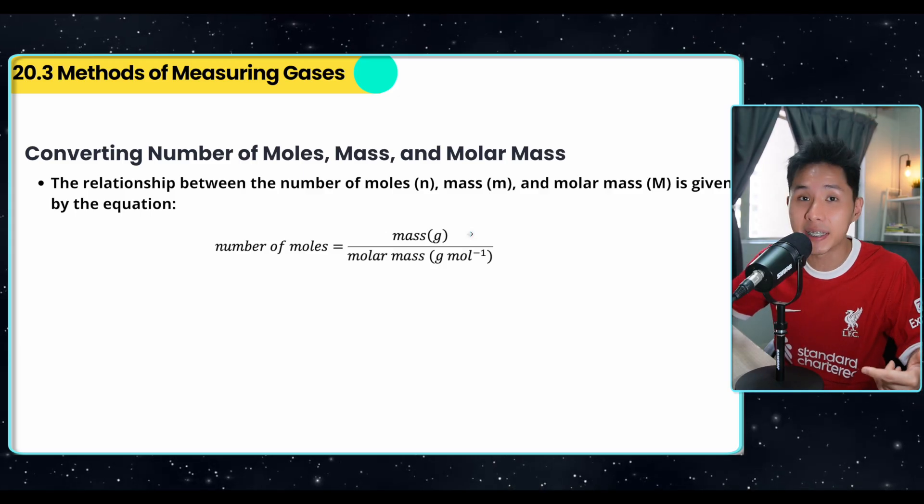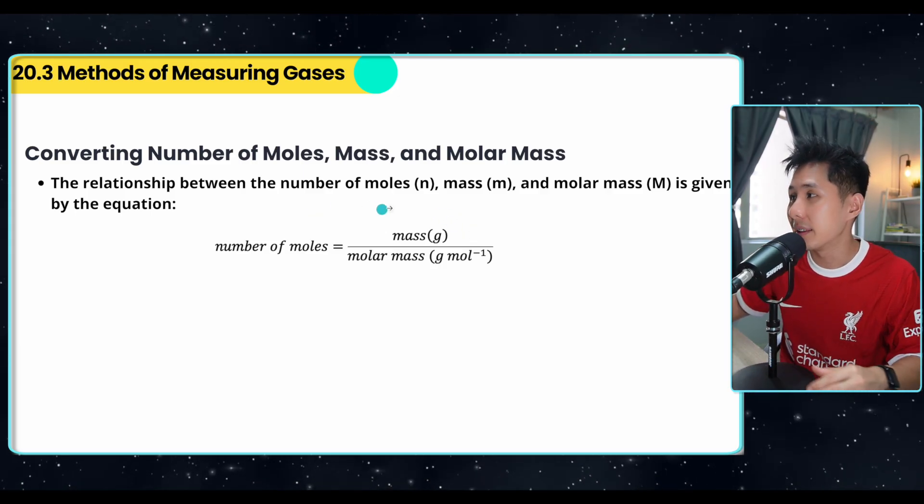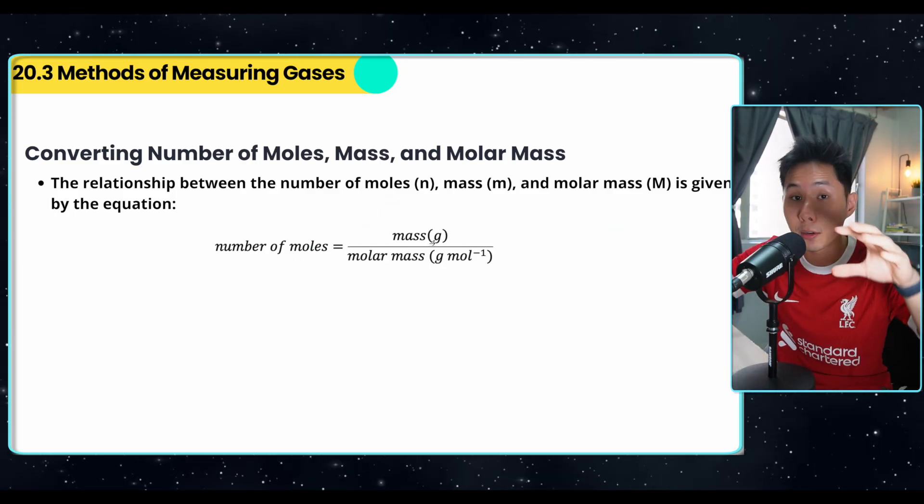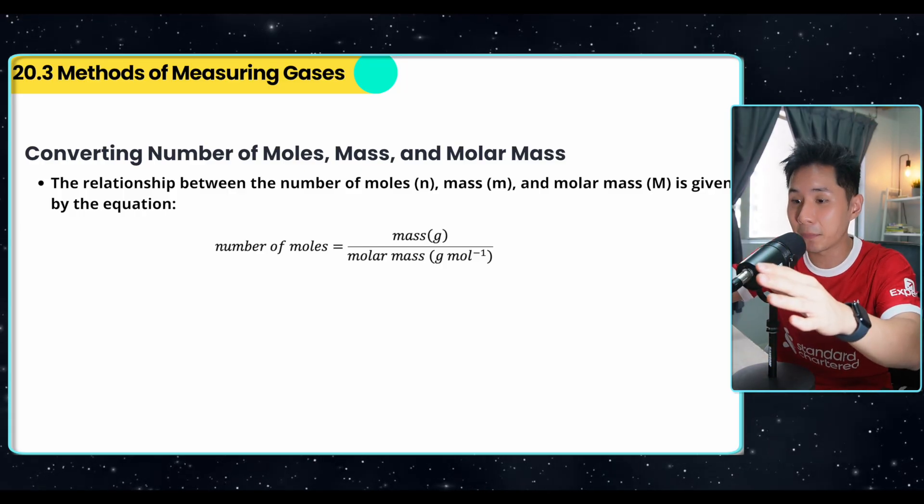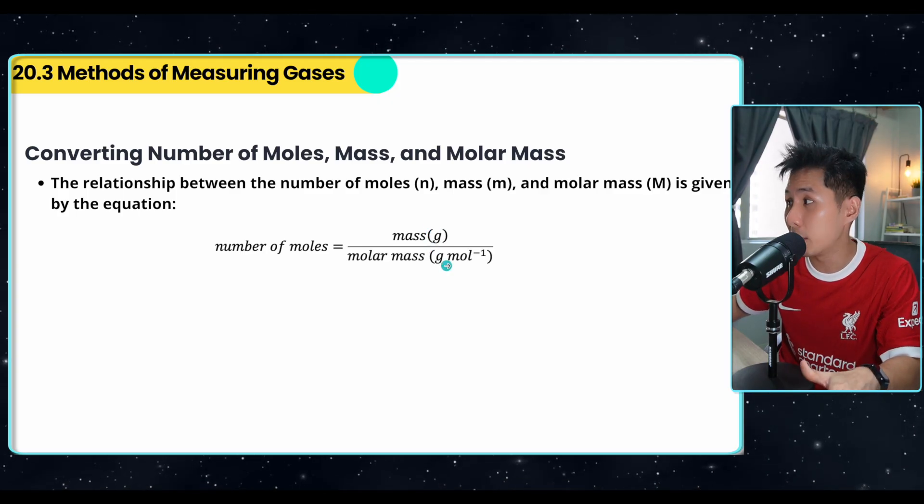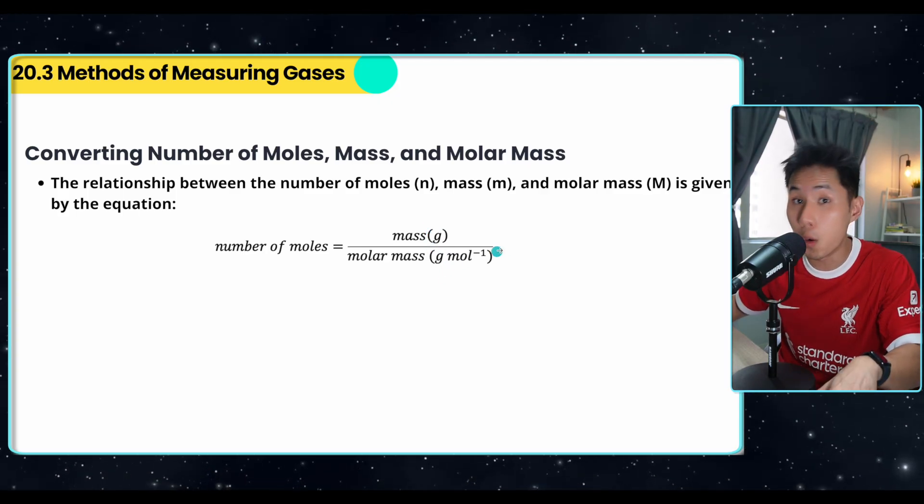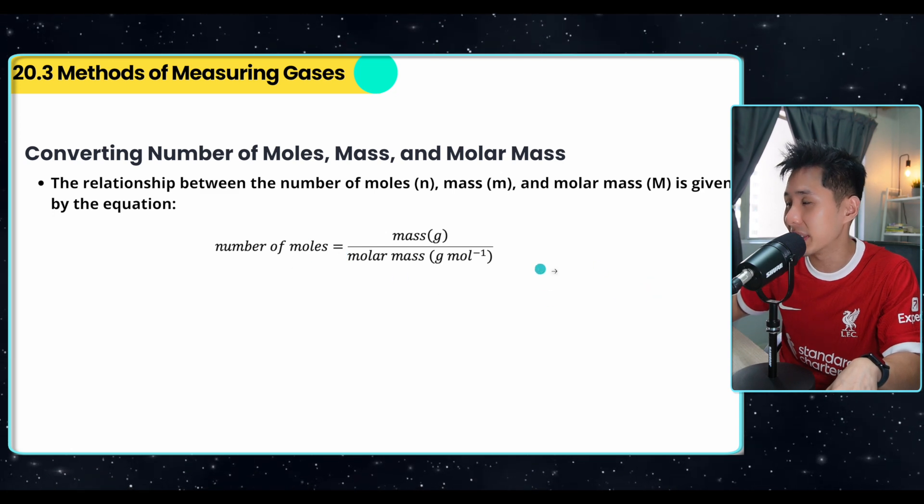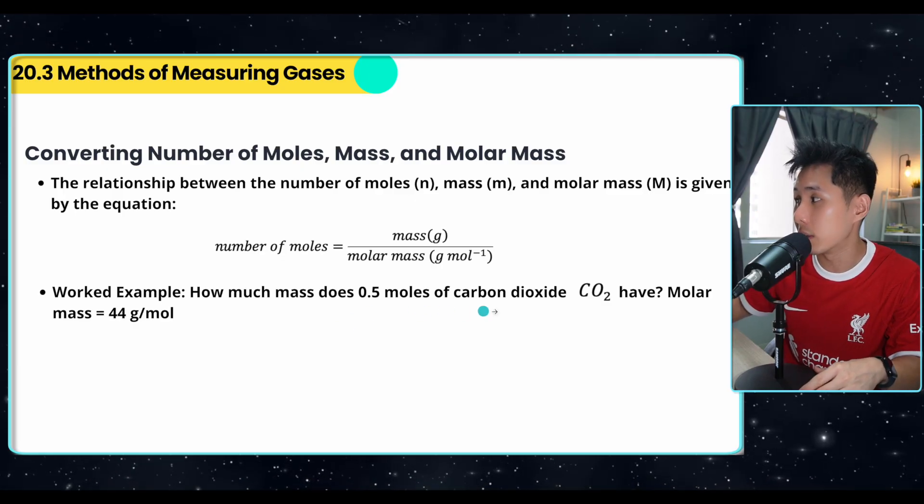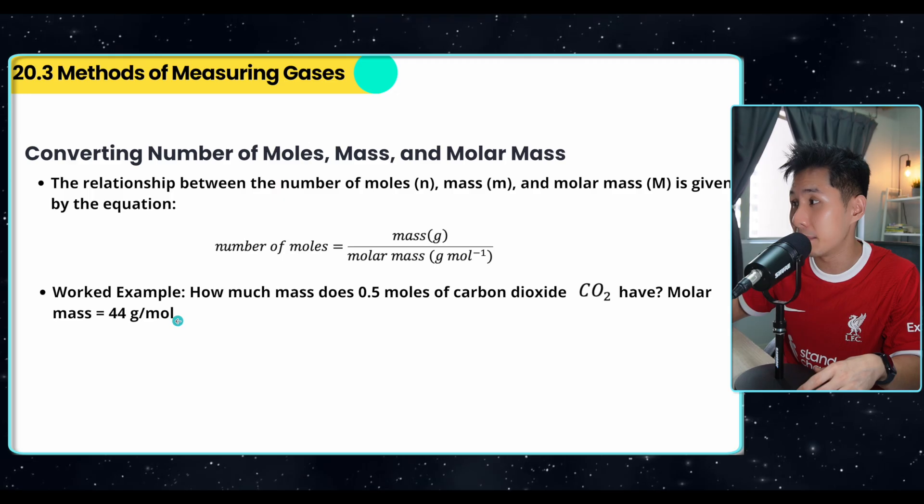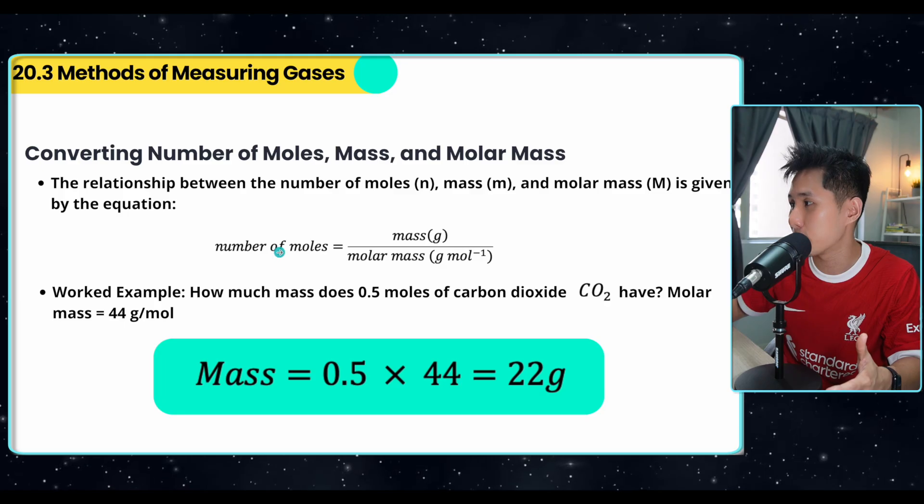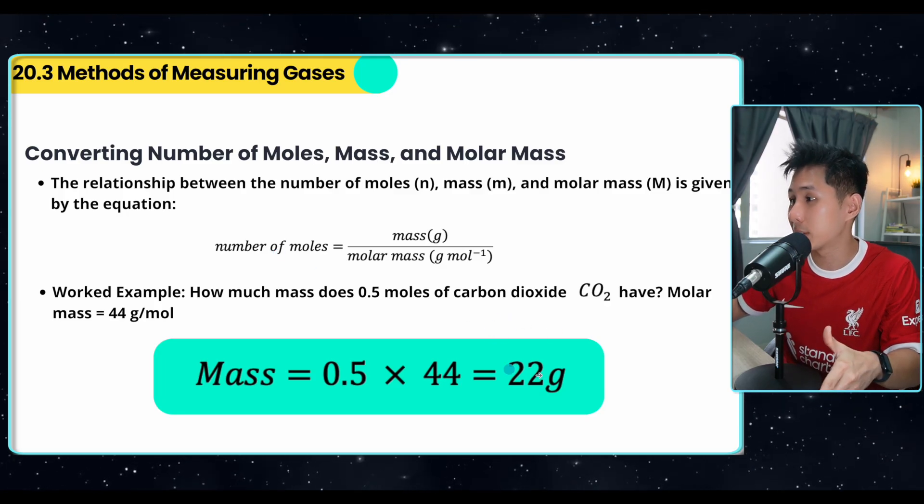Now, just in case you forget about this in chemistry, I'm helping you to revise. There's a relationship between number of moles, mass and molar mass. Number of moles is equivalent to the mass of the gas divided by the molar mass of the gas. So you can see that mass is measured in gram. Molar mass is gram per mole. So if you want to know the number of moles, you can just use mass divided by molar mass. So a work example, if you have 0.5 moles of carbon dioxide and the molar mass is 44 gram, how much mass do you have? So you can apply the equation, substitute the value 0.5 multiplied by 44, that's 22 gram.